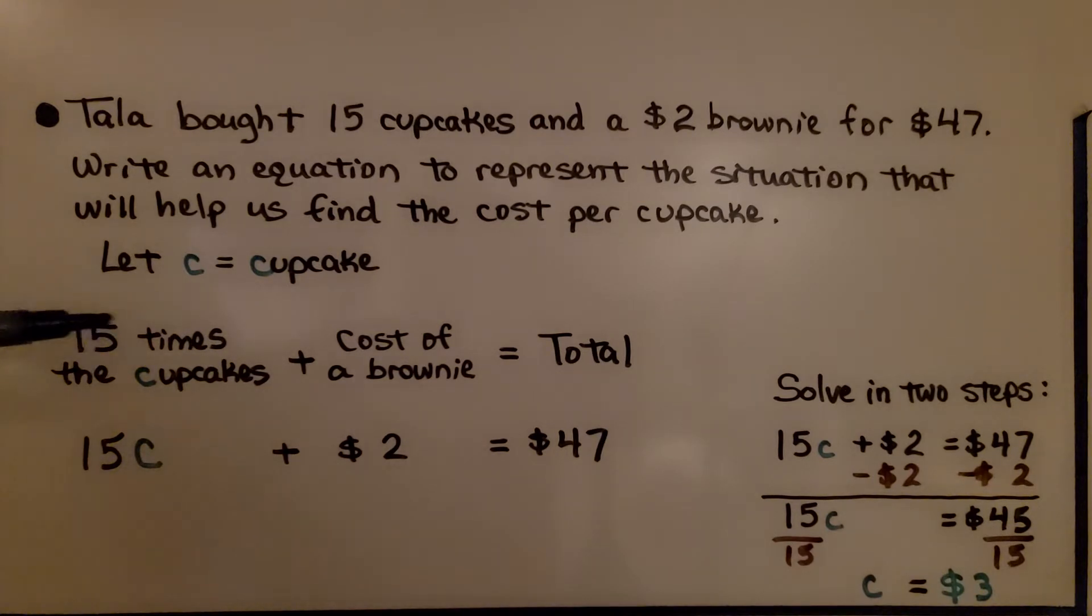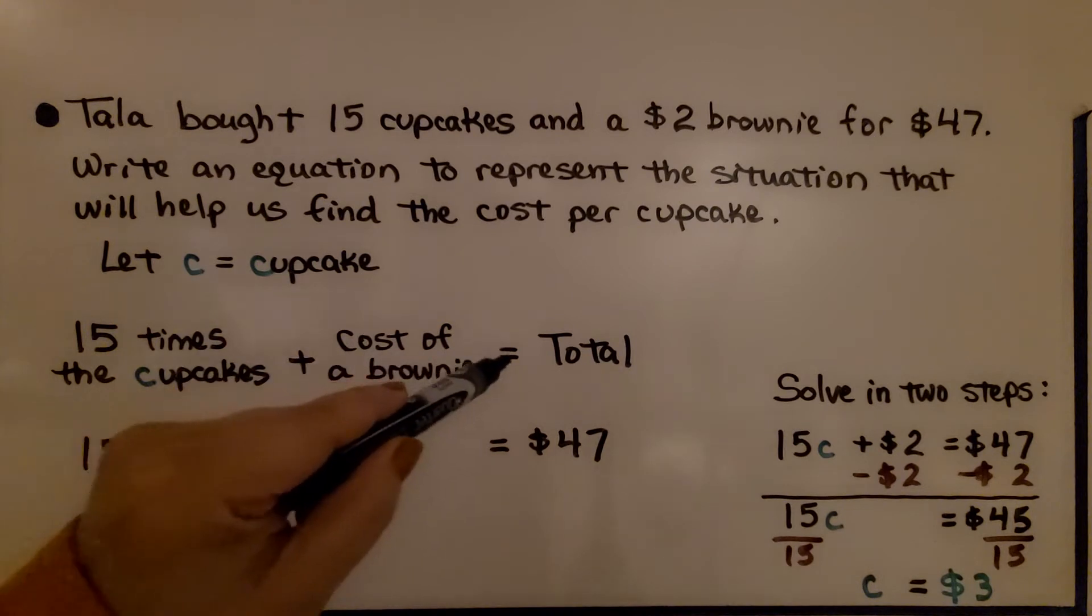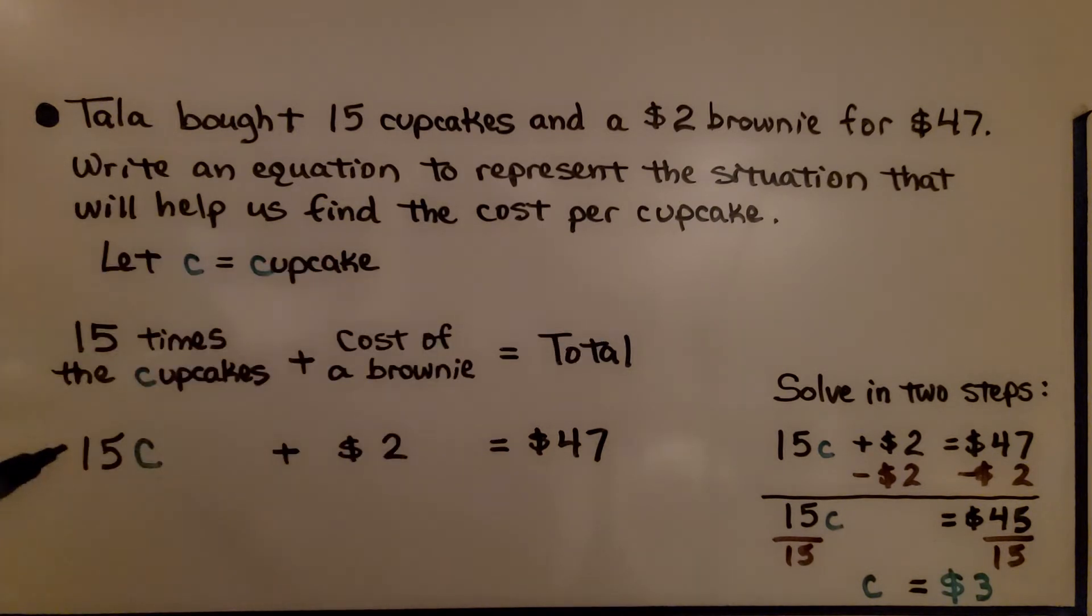We have 15 times the cupcakes plus the cost of a brownie equals the total. So we have 15C plus that $2 brownie equals $47.